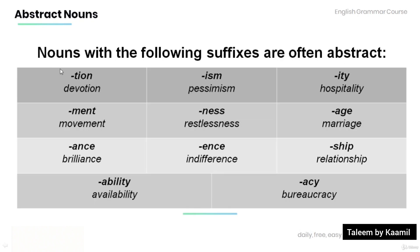Remember, nouns with the following suffixes are often abstract: '-tion' as in 'devotion'; '-ism' as in 'pessimism'; '-ity' as in 'hospitality'; '-ment' as in 'movement'; '-ness' as in 'restlessness'; '-age' as in 'marriage'; '-ance' as in 'brilliance'; '-ence' as in 'indifference'; '-ship' as in 'relationship'; '-ability' as in 'availability'; '-acy' as in 'bureaucracy.'